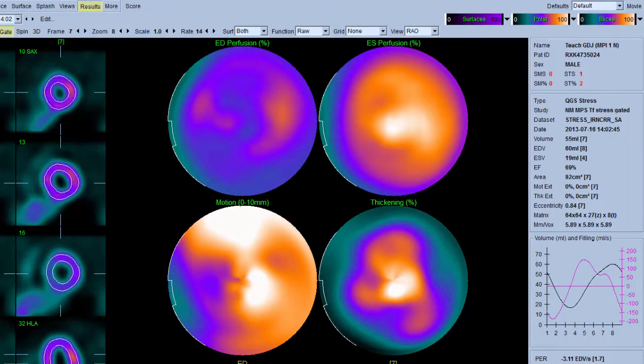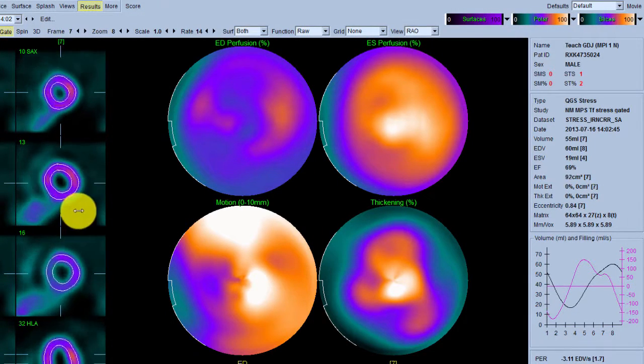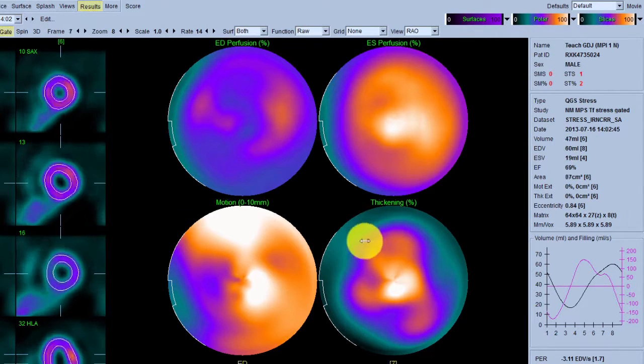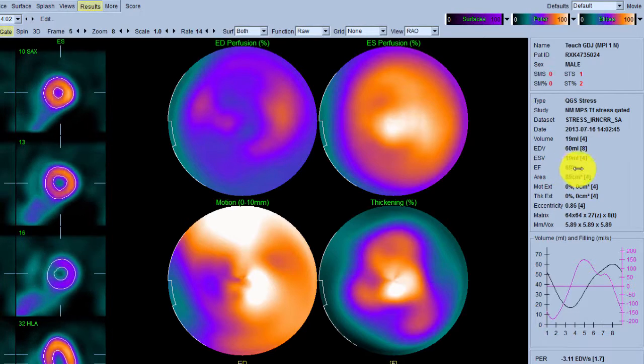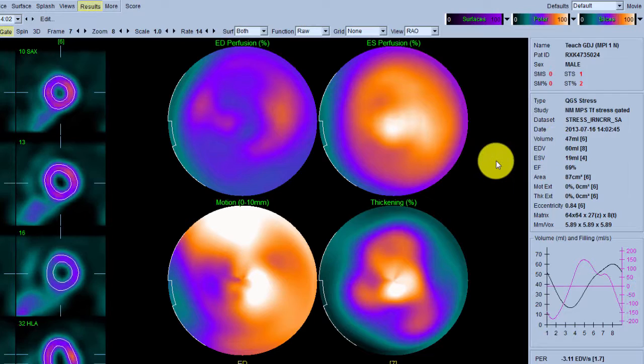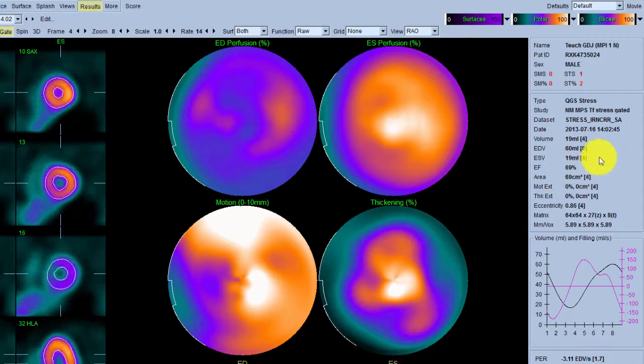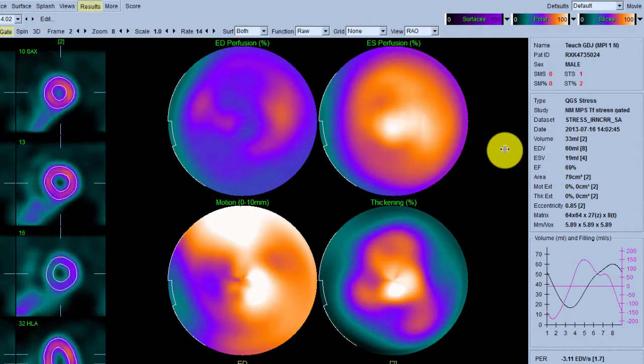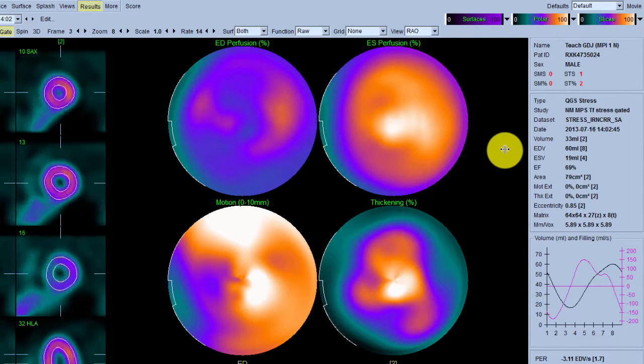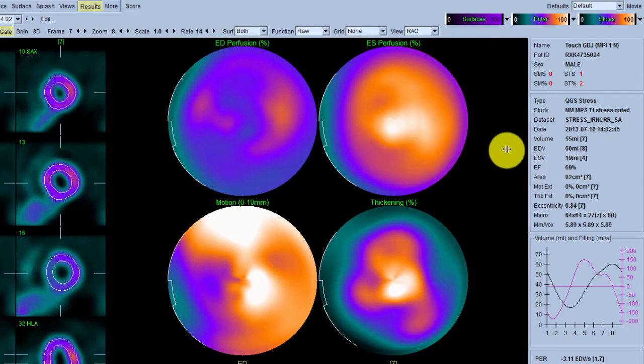We can also take pictures as the heart beats. Here we can see the heart beating. We get important information that we can give to the cardiologists. We can tell them the size of the heart at its largest size, 60 mils here, and the size of the smallest, 19 mils. We can tell them a very important number called the ejection fraction. This is the percentage of blood expelled from the heart, each heartbeat. Here it's 69%, which is normal.